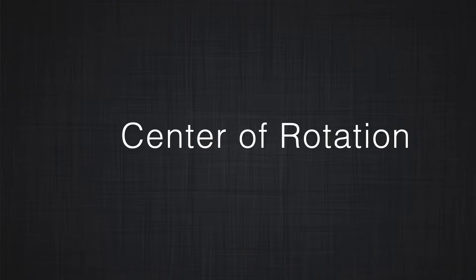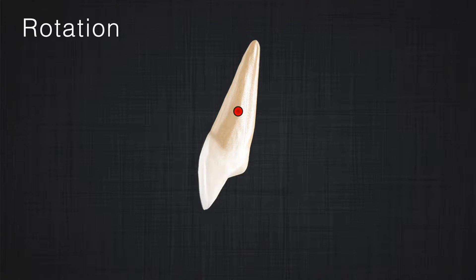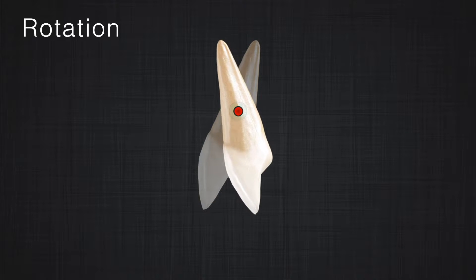One important concept when defining the different types of tooth movement is center of rotation. Let's describe all the movements using the center of rotation concept. In pure rotation, the center of resistance does not move and all points rotate around it, so the center of resistance and center of rotation are the same. A key characteristic of the center of rotation is that there is no displacement — it stays stationary; it is the only point that stays stationary.